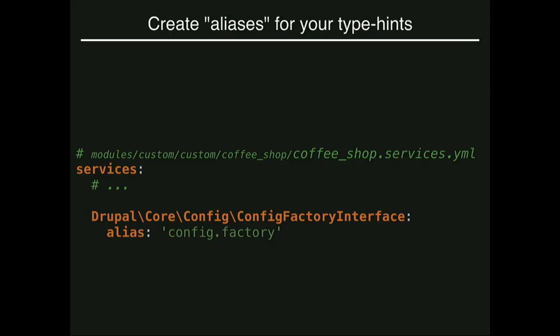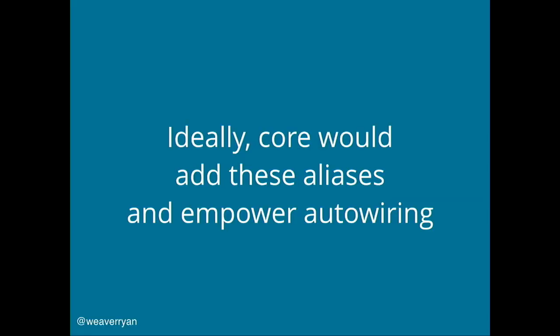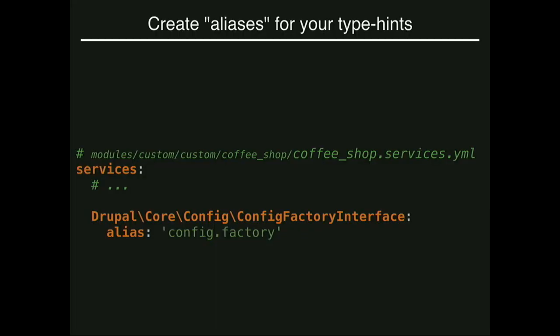Our own CoffeeMachine class is also instantly auto-wireable because when we use class names as service IDs, there really is a service in the container called Drupal\CoffeeShop\Service\CoffeeMachine. Ideally, core would do this for us — in Symfony, core adds aliases for all the services they deem normally usable by end users. It could even be a contrib module that adds all these auto-wiring aliases for all the core stuff — it doesn't add any extra overhead. So you do need to do it now for core stuff, but once you do it one time, you can always auto-wire that ConfigFactoryInterface anywhere.